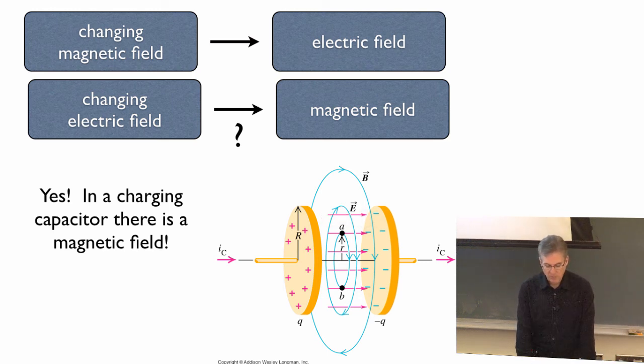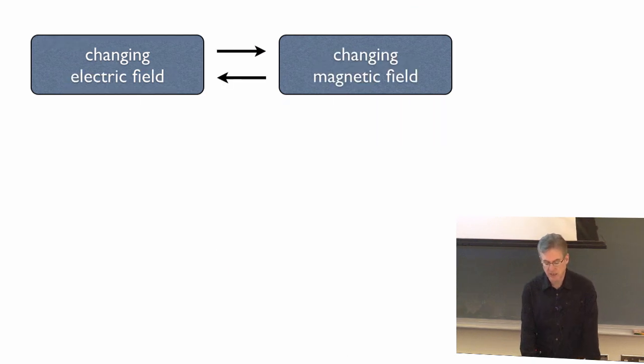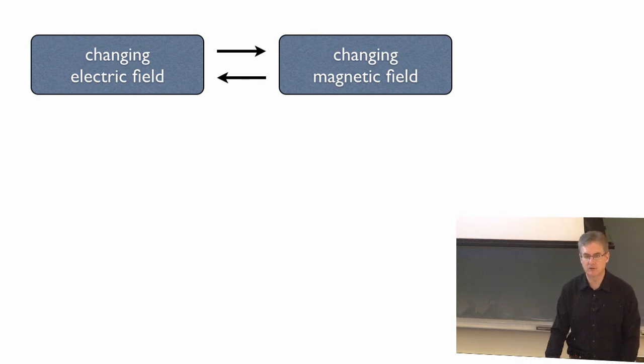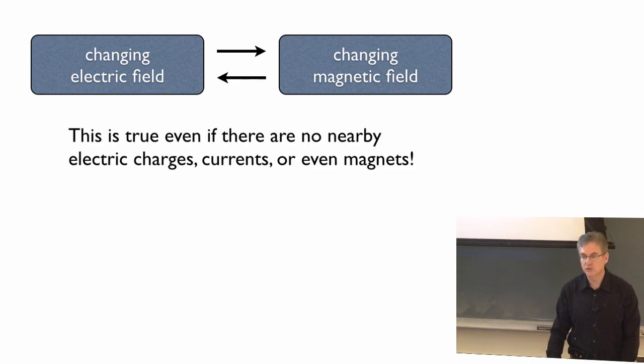So we have that a changing electric field gives you a changing magnetic field and a changing magnetic field gives you a changing electric field. This is true even if there's no nearby electric charges or even any magnets. You don't need to have that somewhere in space, just in a vacuum. If you have an electric field that's changing, you have a magnetic field that's changing and vice versa.